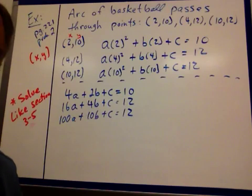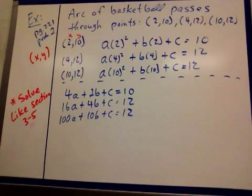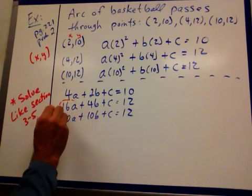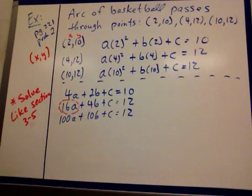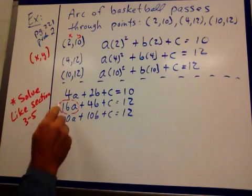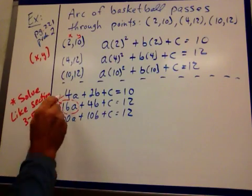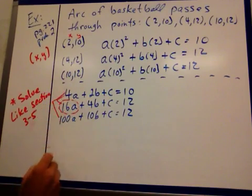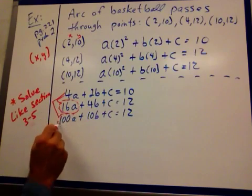And then once I get it from here, I'm going to solve it like I did my three equations. I'm going to take the first equation and the second equation, multiply by negative 4, so I cancel out that a. Then I'm going to take the first and the third equation, I'm going to multiply by 25, and I'm going to cancel this guy out.